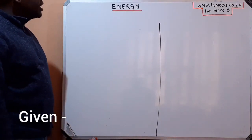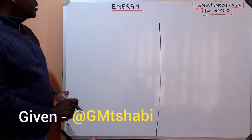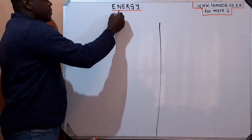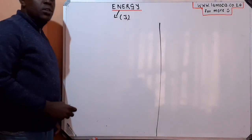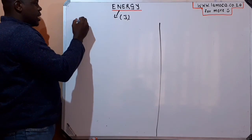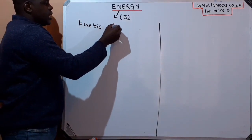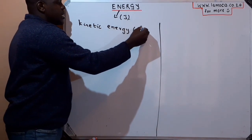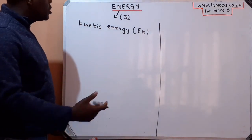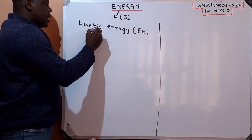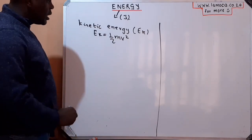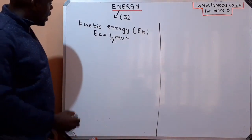Let's look at energy and what we can possibly achieve from this. Energy is the ability to do work. Energy is a scalar quantity and is measured in joules. We have two types of energy: kinetic energy, denoted as Ek. Kinetic energy is the energy that an object has because of its motion — how much energy does it possess because of its motion. Ek is mathematically represented as half of the mass times the velocity squared.